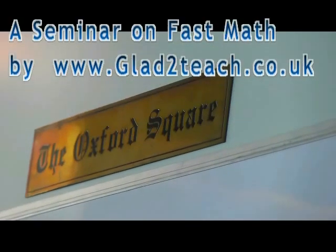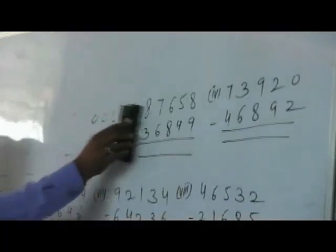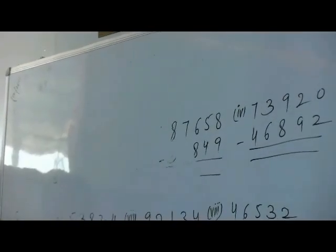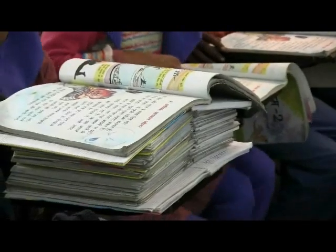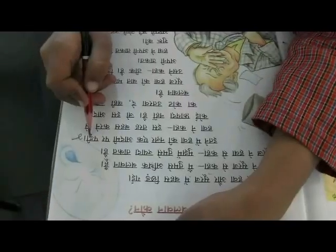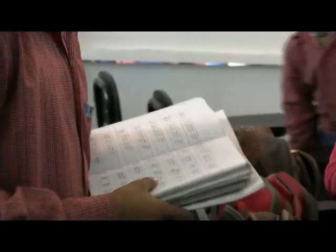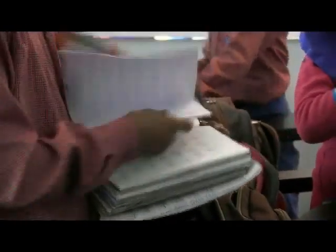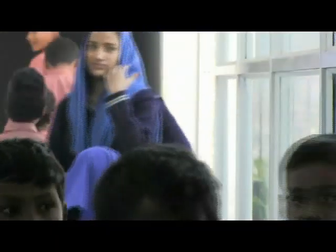Go to sport figure one by one. Go down the stairs. Come here quickly. Go away. One by one, go down.